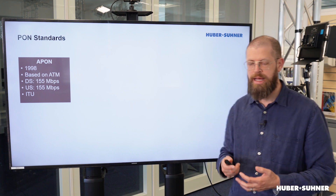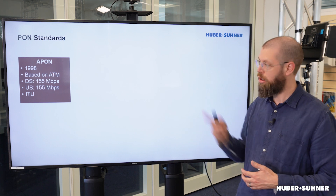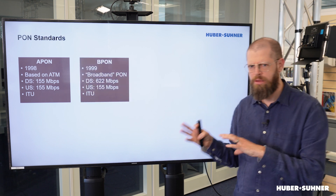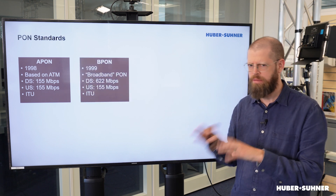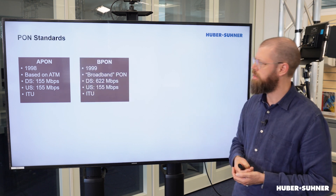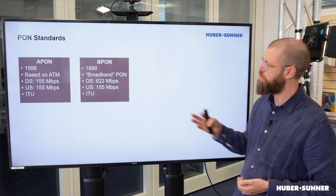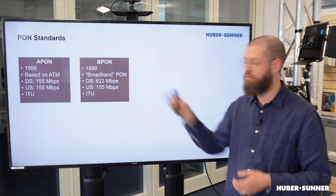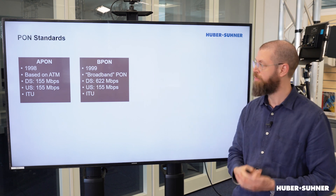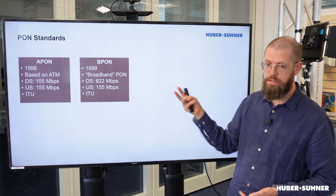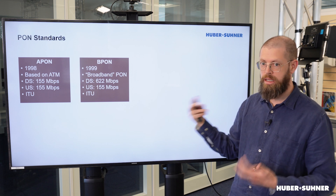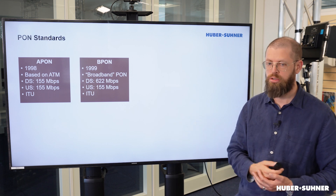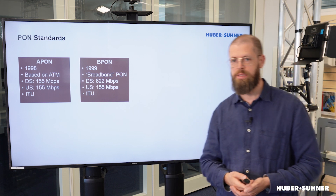Only shortly after that, a revision of the APON standard was released. At the beginning it was also called APON, but that led to quite some confusion, which is why it was quickly changed to B-PON — as in Broadband PON. The downstream was then increased from 155 to 622 Mbits per second.